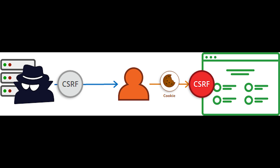Cross-site request forgery involves a web server taking some action based on an authenticated user browsing to a particular page. Examples may include changing an account password or making a transaction via an online banking portal.